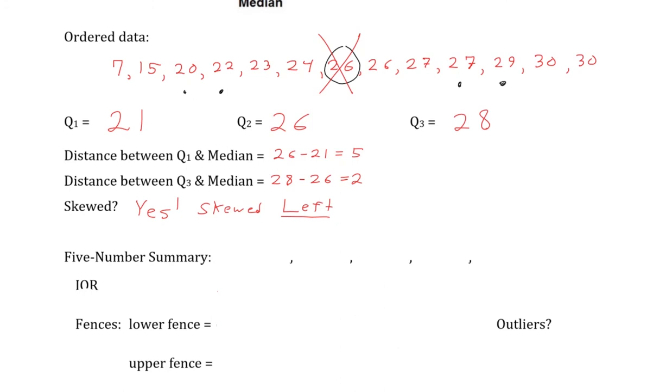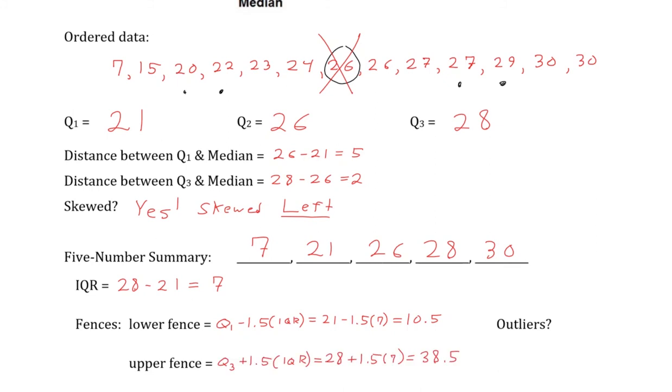As for our five number summary, we have our minimum value is 7. Q1, Q2, and Q3 we've already calculated, and our maximum value in the dataset is 30. However, with that five number summary, we also want to consider what fences we have that hopefully can identify if any outliers exist. First, when we calculate our IQR, which is going to be the difference of Q3 minus Q1, which is a distance of 7. With that, we can find our lower fence to be Q1 minus 1.5 times 7. And that gives us a total value of 10.5. As well as our upper fence, which will be Q3 plus 1.5 times IQR, which overall gives us a total of 38.5.